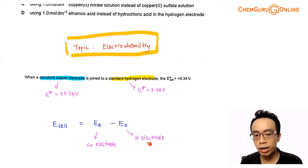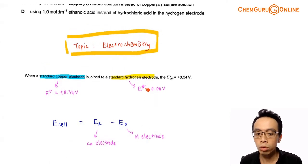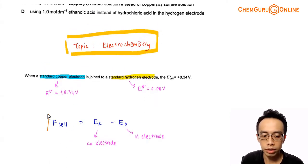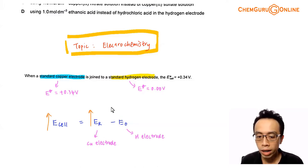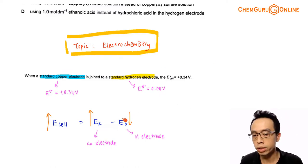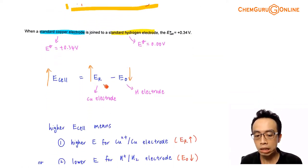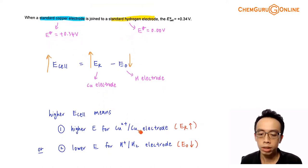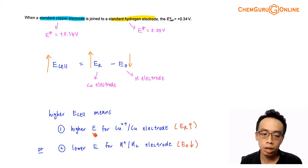Since the question asks what change leads to a higher cell potential, we need to identify what will cause E cell to increase. To increase E cell, I can either increase E reduction — that means increasing the E value for the copper electrode — or decrease the E value for the hydrogen electrode. Either one of these changes will cause E cell to increase.